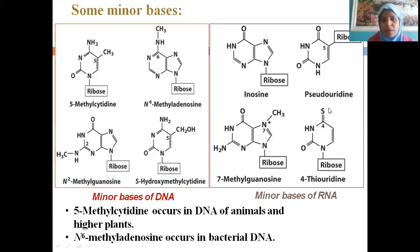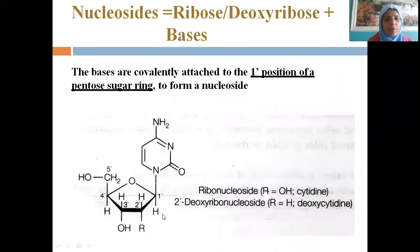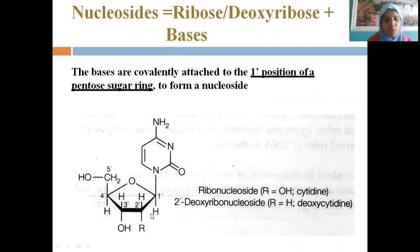From RNA, we have inosine, pseudouridine, 7-methylguanosine, and 4-thiouridine as minor bases. The bases are covalently attached to the first position of the pentose sugar ring. Where only H is present instead of OH, this indicates deoxyribose sugar, to which the nitrogen base is attached. Here cytidine is shown as an example.